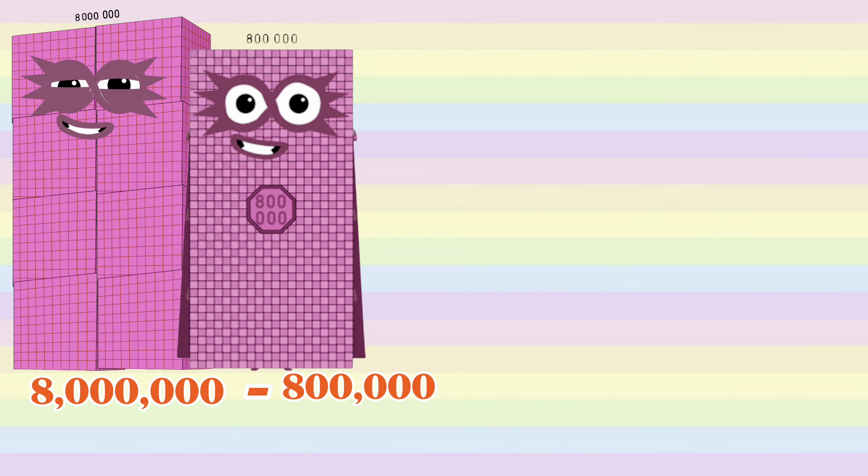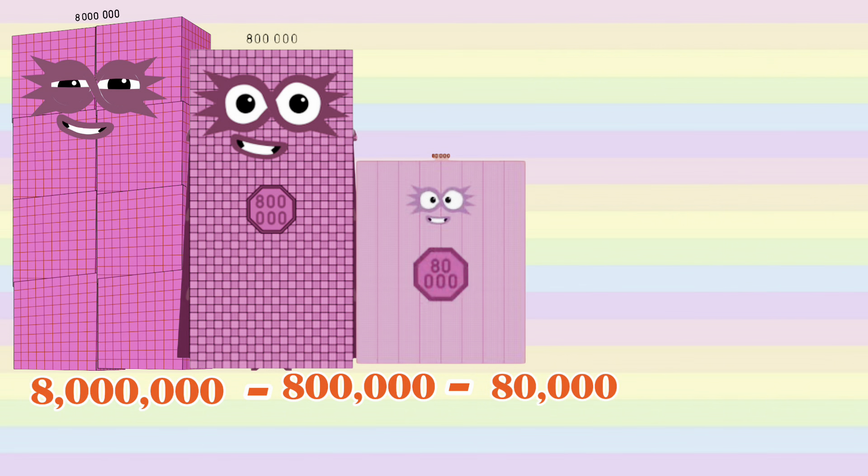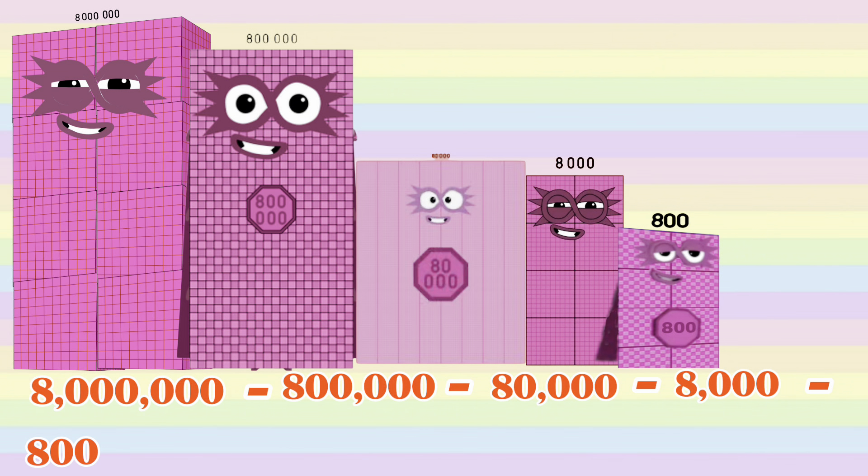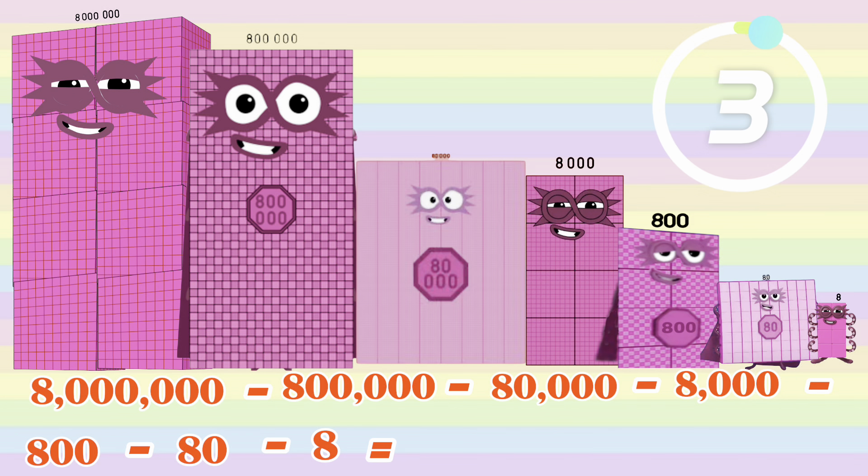8 million minus 800,000 minus 80,000 minus 8,000 minus 800 minus 80 minus 8 equals 7,111,112.